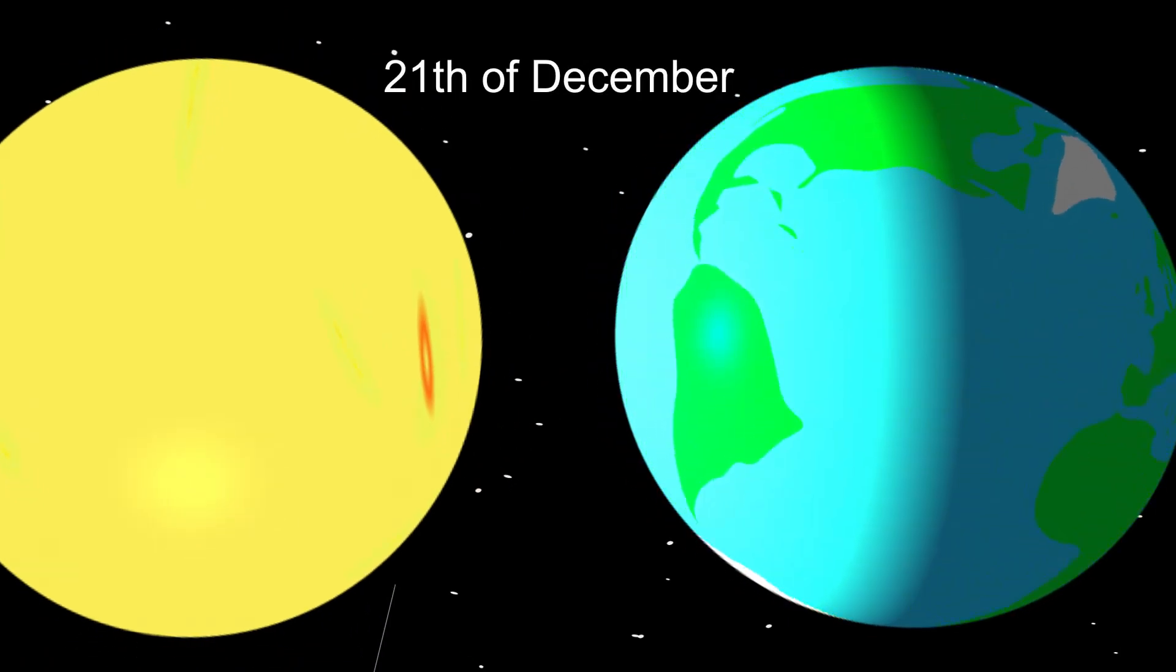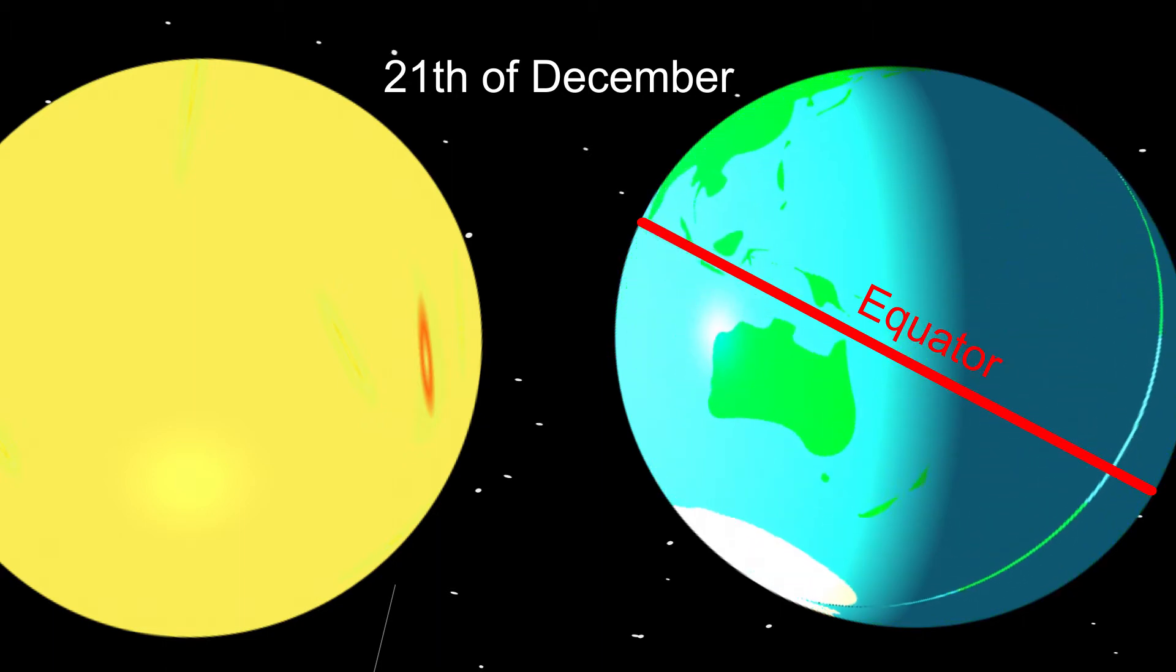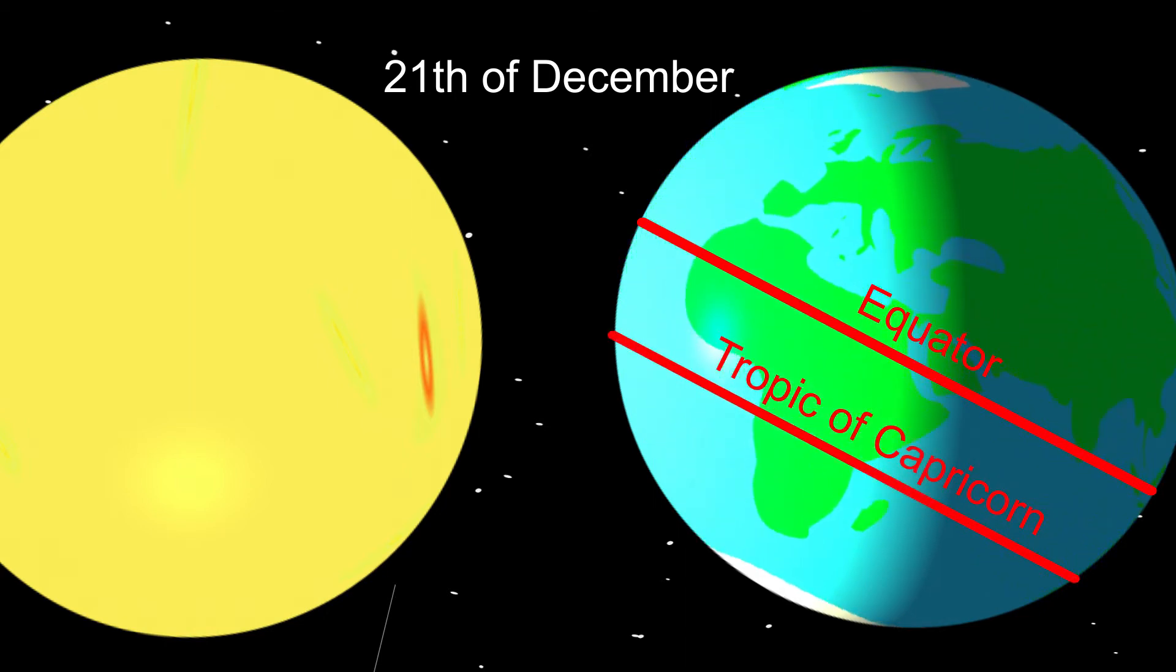Again three months later, at the 21st of December, the southern hemisphere of the Earth is directed towards the Sun. It's summer on the southern hemisphere. The sun heats the latitude circle at 23 and a half degrees south of the equator, which we call the Tropic of Capricorn.